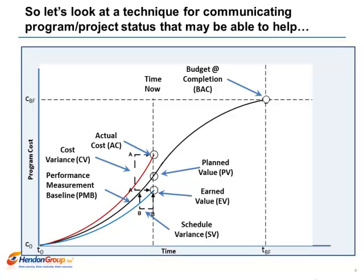Now here's where I am going to deviate from the PMI Project Management Body of Knowledge, also known as the PMBOK, and it has to do with the calculation of scheduled variance. The PMBOK will tell you to calculate the difference between earned value and planned value at time now. This will tell you scheduled variance in terms of scheduled spend, and since spend rates vary week to week, it is difficult to state variance in terms of time.